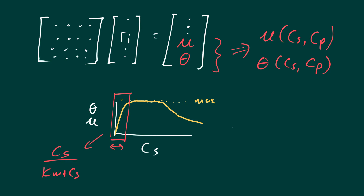On the other side — not in this example, but worth noting — we can get substrate inhibition, where very high concentrations of glucose irritate the organism. This is typically described by a term like (1 + cs/ks) to the minus one, which gives a decreasing functionality away from the maximum. These are typical inhibition functions. Note that the Monod region applies at very low concentrations to make rates zero as substrate becomes zero.